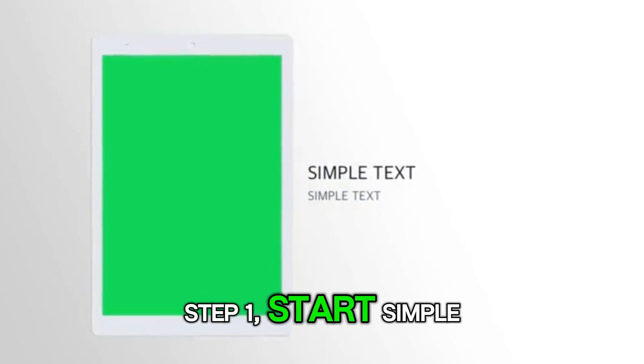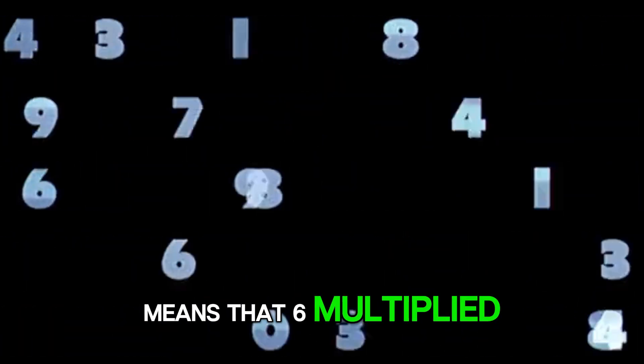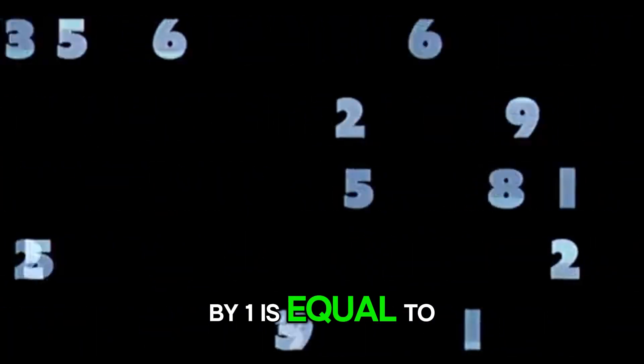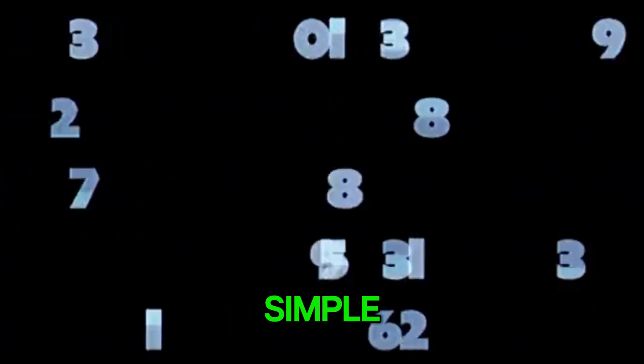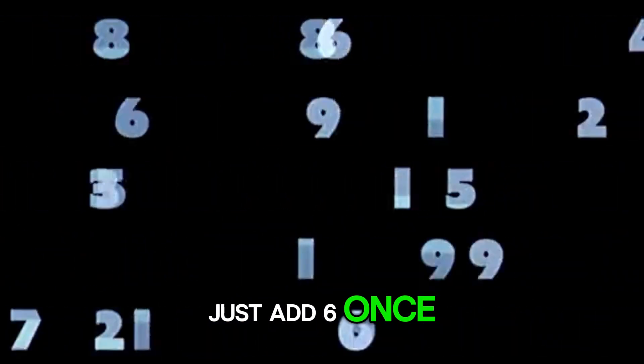Step 1. Start simple. Remember 6 times 1 equals 6. This means that 6 multiplied by 1 is equal to 6. It is pretty simple. Just add 6 once.